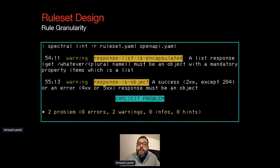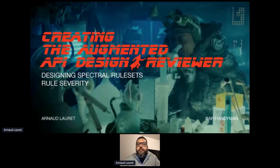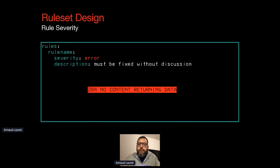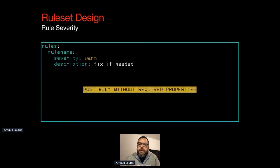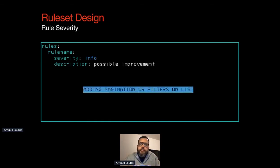This rule is definitely too coarse. Let's see what happens with multiple smaller rules checking individual aspects of these guidelines. That's better — we know exactly what the problem is thanks to fine-grained rules. Spectral rules can have different severities, giving a better vision of the different problems. Here's how I use them: Error — it must be fixed without discussion, like a 204 returning data. Warning — it looks like an error but can be normal, fix it if needed. Info — possible improvement, like suggesting pagination or search filters on a list endpoint.